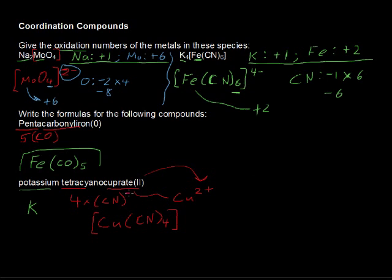So that's a charge of -4. And we've got a copper with a charge of +2. So that's going to give a charge of 2- on this ion.